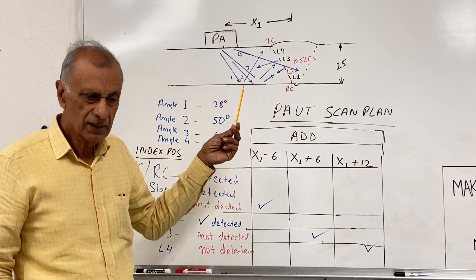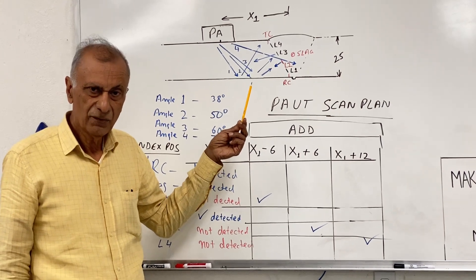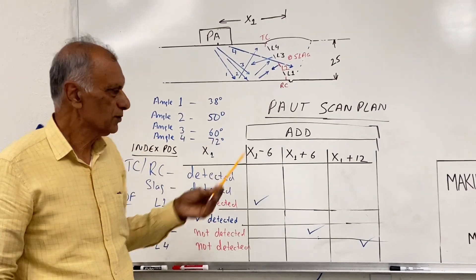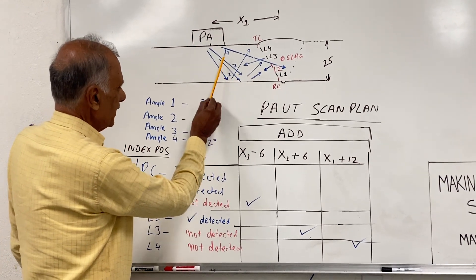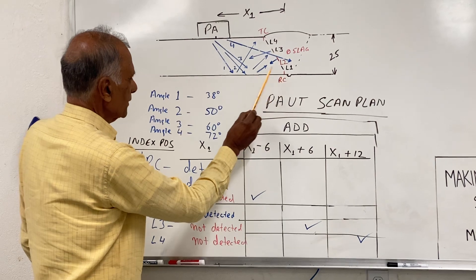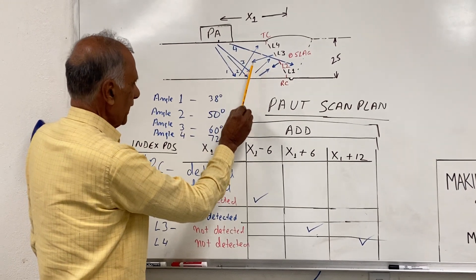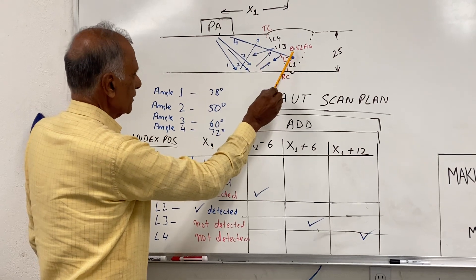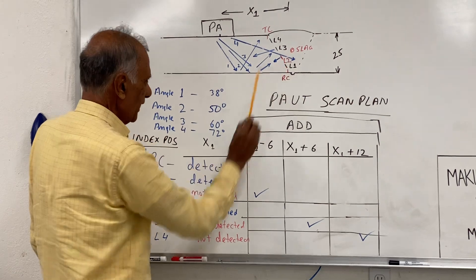The issue is that even though they may be illuminating the whole weld, the question is, are we seeing all the flaws? If you illuminate the whole weld like this, you will see the root crack, you will see the toe crack with the reflection going here, and you will also see the slag which is here by the sound going here and getting reflected.